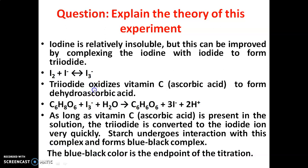The I3 minus ions undergo interaction with ascorbic acid and form dehydroascorbic acid. Then the starch solution undergoes interaction with the resulting solution and forms a blue-black complex. This blue-black color indicates the end point of the titration. That is the theory of this experiment.